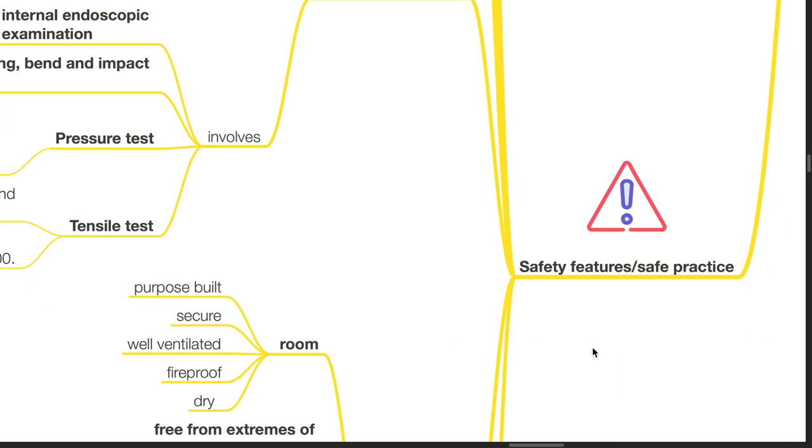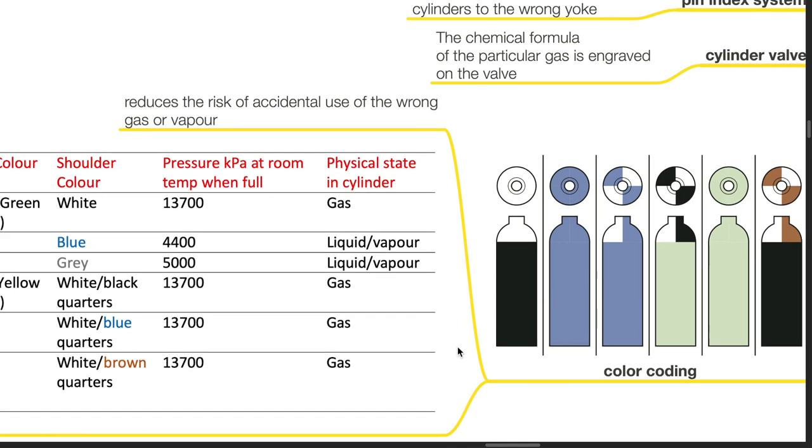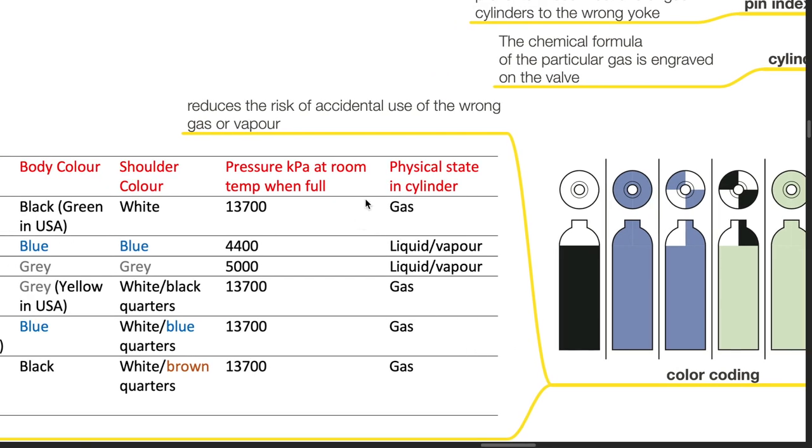Safety features and safe practice: Gases and vapors should be free of water vapour when stored in cylinders. Water vapour freezes and blocks the exit port when the temperature decreases as the cylinder is open. Pin index system, as mentioned, prevents misconnections of gas cylinders to the wrong yoke. Cylinder valve: The chemical formula of the particular gas is engraved on the valve. Color coding of gas cylinders reduces the risk of accidental use of the wrong gas or vapour.